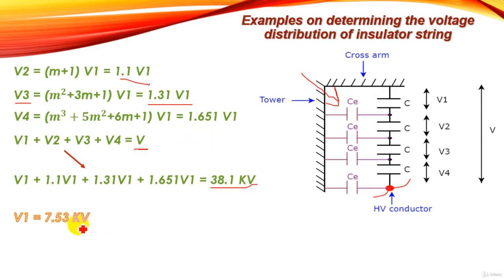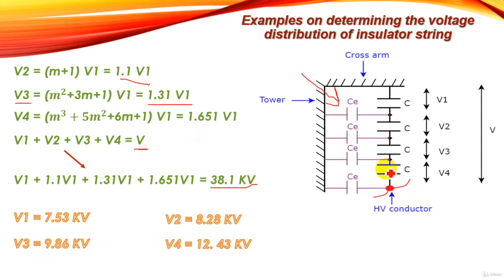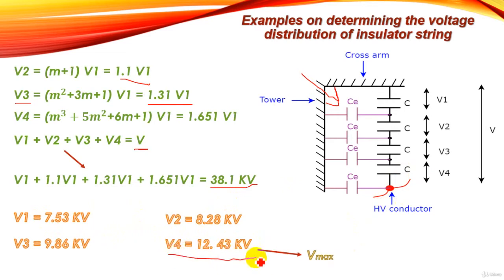Solving gives: V1 equals 7.53 kV, V2 equals 8.28 kV, V3 equals 9.86 kV, and V4 equals 12.43 kV across the lower unit. We can observe that the maximum voltage occurs across the lower unit — the unit closest to the high voltage conductor. Considering stray capacitances, the voltages across each unit are not equal.